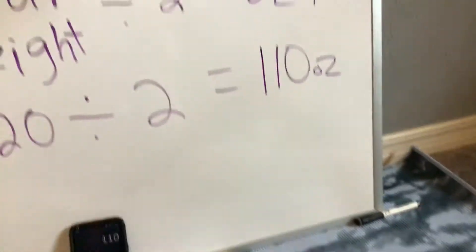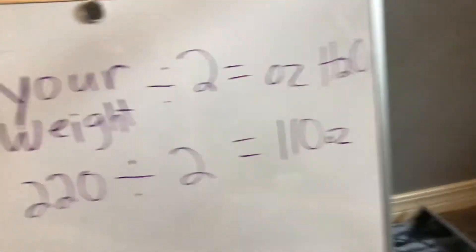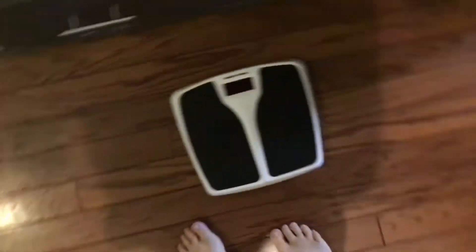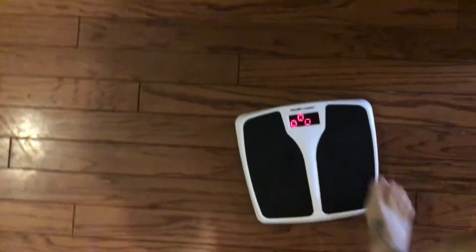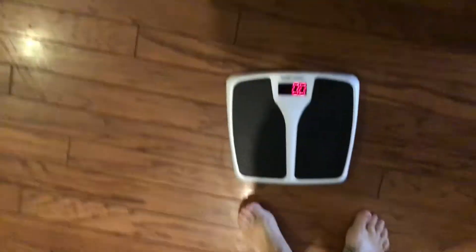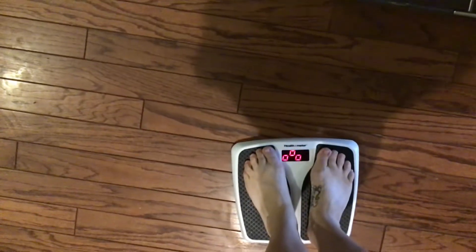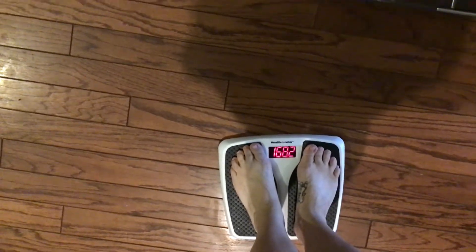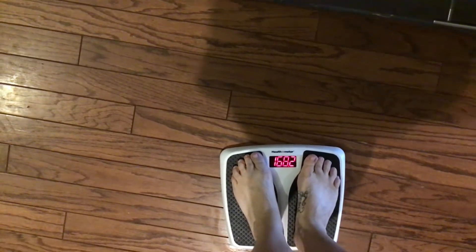So if you weigh 220 and you divide it by two, that would mean you would need to drink 110 ounces per day of water. Let's see how much I weigh and then we will calculate my weight. Always weigh yourself on a flat surface—don't put your weight scale on a carpet.